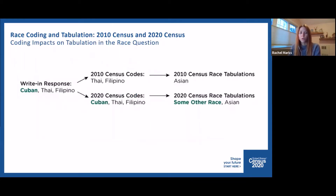This improvement to the coding rules impacts the final data by recognizing the rich and complex detailed identities reported by respondents. For example, the write-in response 'Cuban, Thai, Filipino' — in 2010, Thai and Filipino were prioritized over Cuban because they were detailed race groups, so Cuban was not coded and the response was tabulated as Asian. In 2020, all three groups were coded, and the tabulation would be Asian — representing Thai and Filipino — and some other race — representing the Cuban response.